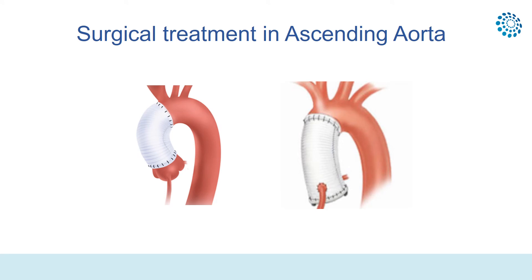Surgery is the treatment of choice for ascending aorta dissection (Type A). It reduces one-month mortality from 90% to approximately 30%, with the advantage over conservative therapy being particularly evident in long-term follow-up. Despite improvements in surgical and anesthetic techniques, perioperative mortality of 25% remains high, mainly due to delays in surgical treatment or the presence of severe complications. Ascending aorta replacement with a tubular graft is the most frequently used procedure.